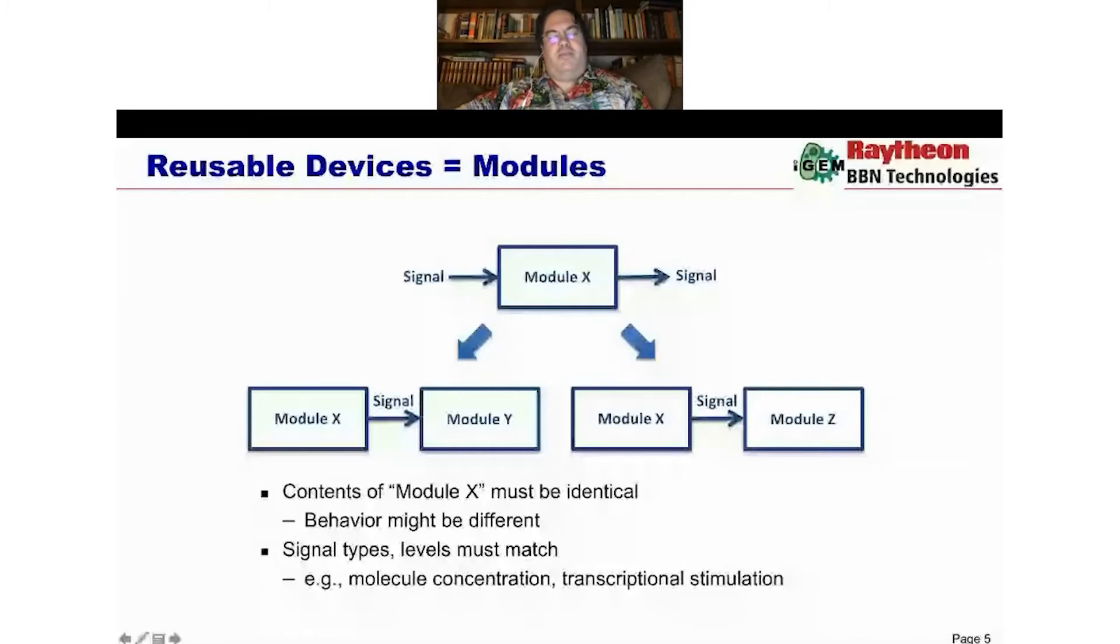So like our not device before took in a signal that it would interpret as being true or false. The signal is actually the activity of a promoter. But at the higher informational level, we can think about those levels of activity as being signals that mean true or false. And it put out another signal that was a true or false, which was opposite of the one that came in. So if true came in, then false came out. We can then connect that to different sorts of reporters, another module Y or a module Z. We can only think about device X as being a module if when we connect it up in these different conditions, we don't change anything about the design of device X, even though its behavior might be a bit different because of its context.